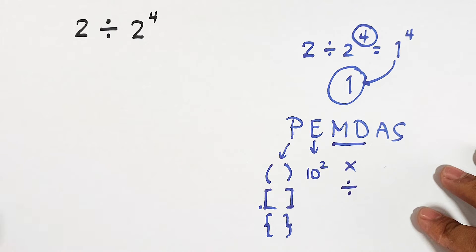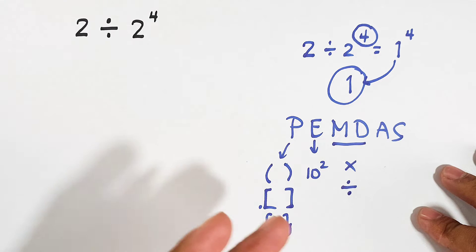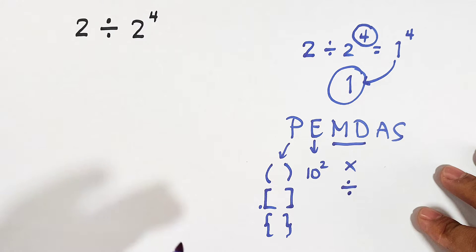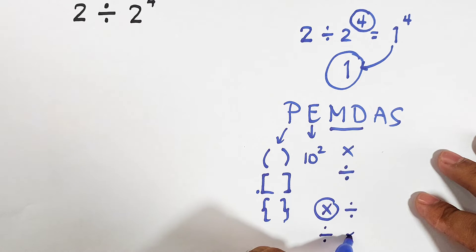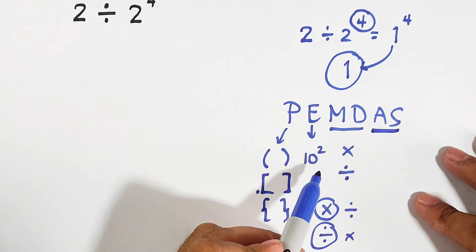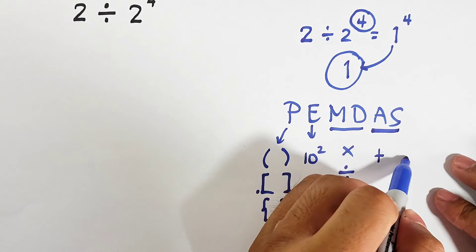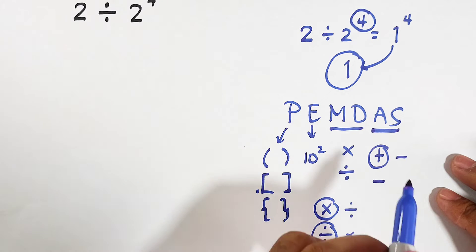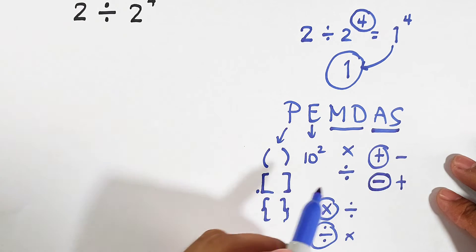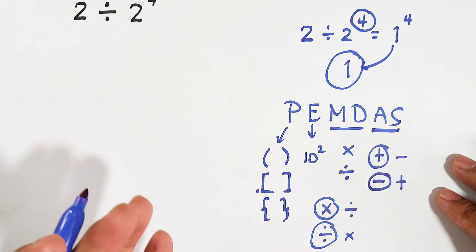A lot of people are confused about which comes first — multiplication or division. The rule is: whichever comes first from left to right, you perform it. If multiplication comes first, do multiplication first; if division comes first, do division first. The same applies to addition and subtraction: whichever appears first from left to right, perform it first. That is the left-to-right rule for PEMDAS.